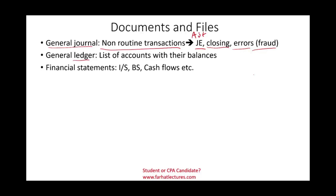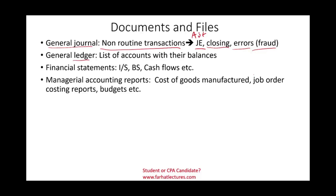The financial statements are the output — the final results — including the income statement, balance sheet, cash flow statement, and statement of stockholders' equity. We can also have managerial accounting reports, which are internal financial statements such as cost of goods manufactured, job order costing reports, budgets, and variances.